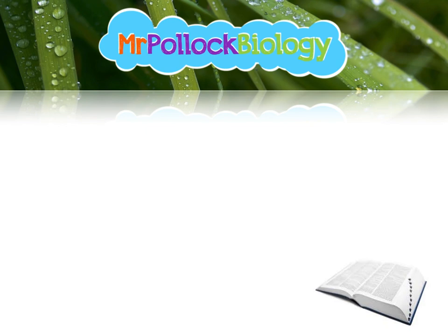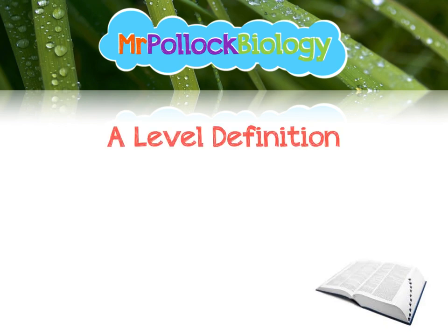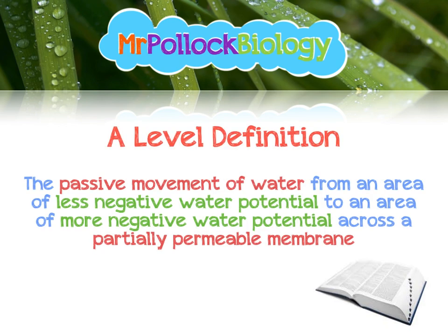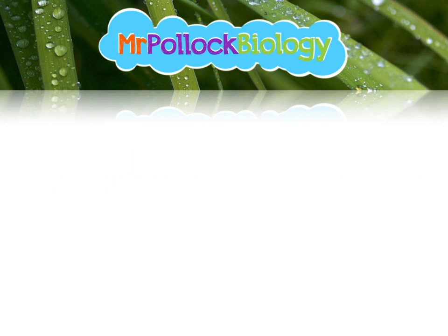So let's look at our A-level definition. Osmosis is the passive movement of water from an area of less negative water potential to an area of more negative water potential, and that occurs across a partially permeable membrane. The word passive just means that there's no energy required for this process.